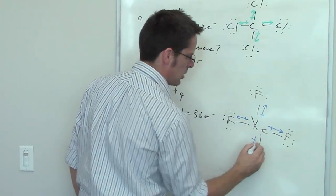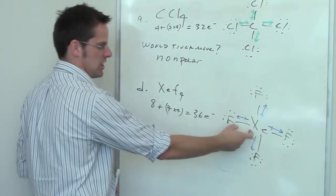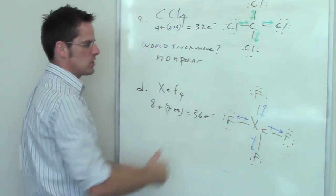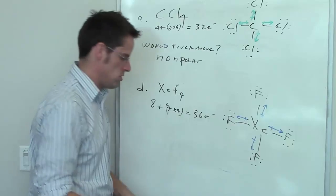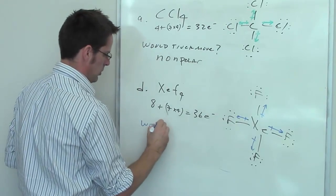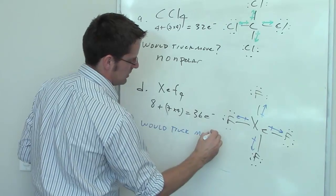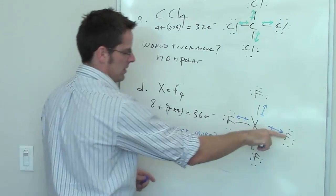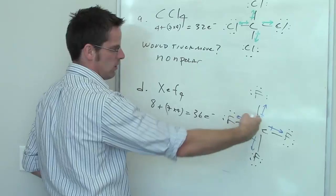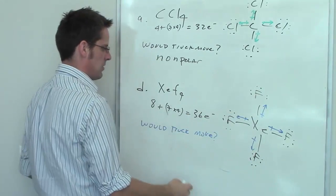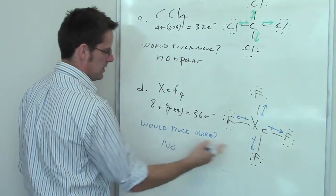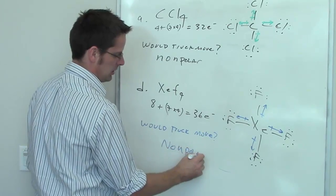And then I ask myself the truck question. If xenon were a truck stuck in the mud, and each of those fluorines were pulling it, would it move? So would truck move? And you can hopefully see that the answer, I mean, I've got fluorine pulling to the right, another one pulling to the left, they cancel each other out. One pulling up, one pulling down, they cancel each other out. The answer is no. So this molecule would also be non-polar.